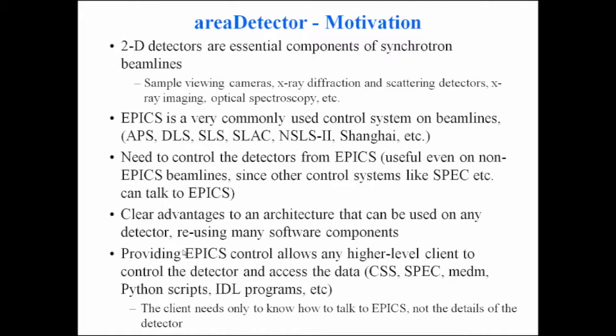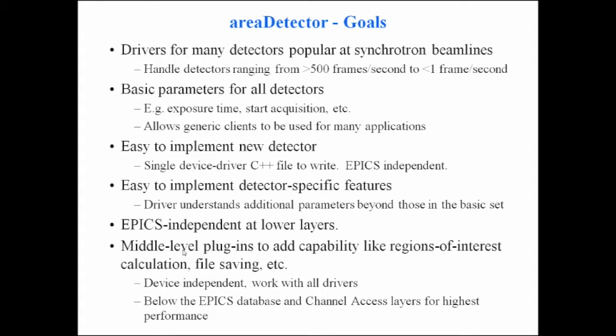There are clear advantages to having a framework or architecture that can be used on any detector, letting you reuse lots of software components. By putting EPICS control on a detector, you let any high-level client — Control System Studio, SPEC, MEDM, Python, IDL — control the detector and access the data. The client only needs to know how to talk to EPICS, not the details of a particular detector.